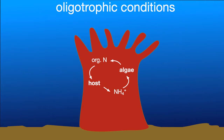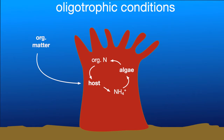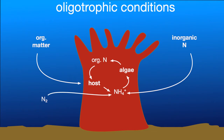Nitrogen cycling in corals involves complex interactions between the host and its symbiotic partners. Since nitrogen is required for growth and productivity of corals, maintaining a stable and constant supply is crucial to the stability of the organism. While the coral host may acquire new nitrogen via heterotrophic feeding and uptake of inorganic nitrogen, microbial processes like nitrogen fixation, nitrification, and denitrification may help to optimize the internal nitrogen availability. The coral holobiont is able to thrive in a wide range of nutrient conditions.